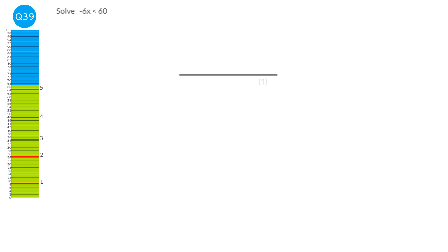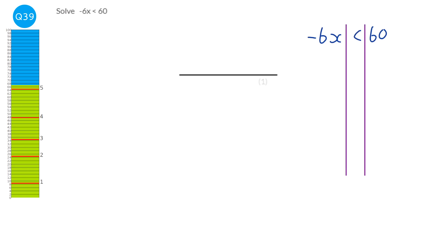We have minus 6x is less than 60. Adding tramlines and dividing both sides by minus 6: on the left we're left with x, and on the right 60 divided by minus 6 is minus 10. Crucially, whenever you divide both sides by a negative number, you must flip the inequality sign. So our answer is x is greater than minus 10.